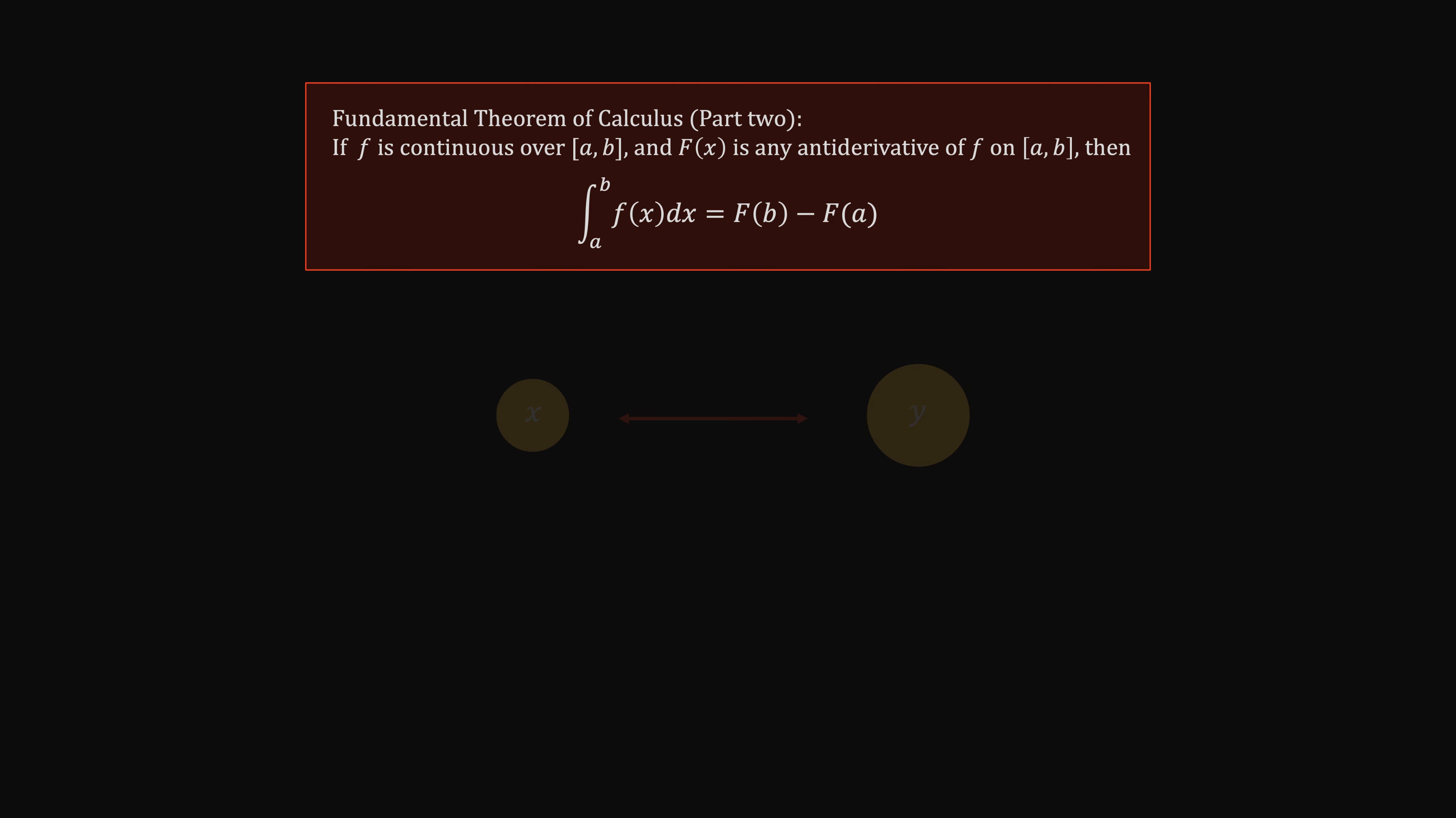Part 2 of the theorem is saying that to find out when x changes from a to b, how much y changes, there are two ways to do so. One way is to aggregate the derivative term little by little from a to b. This is the tedious way.